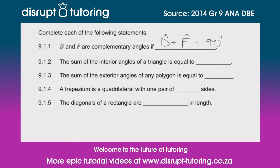The next one: the sum of the interior angles of a triangle is equal to — and that's always an easy one, and this one comes up a lot. All the angles inside a triangle are equal to 180 degrees.